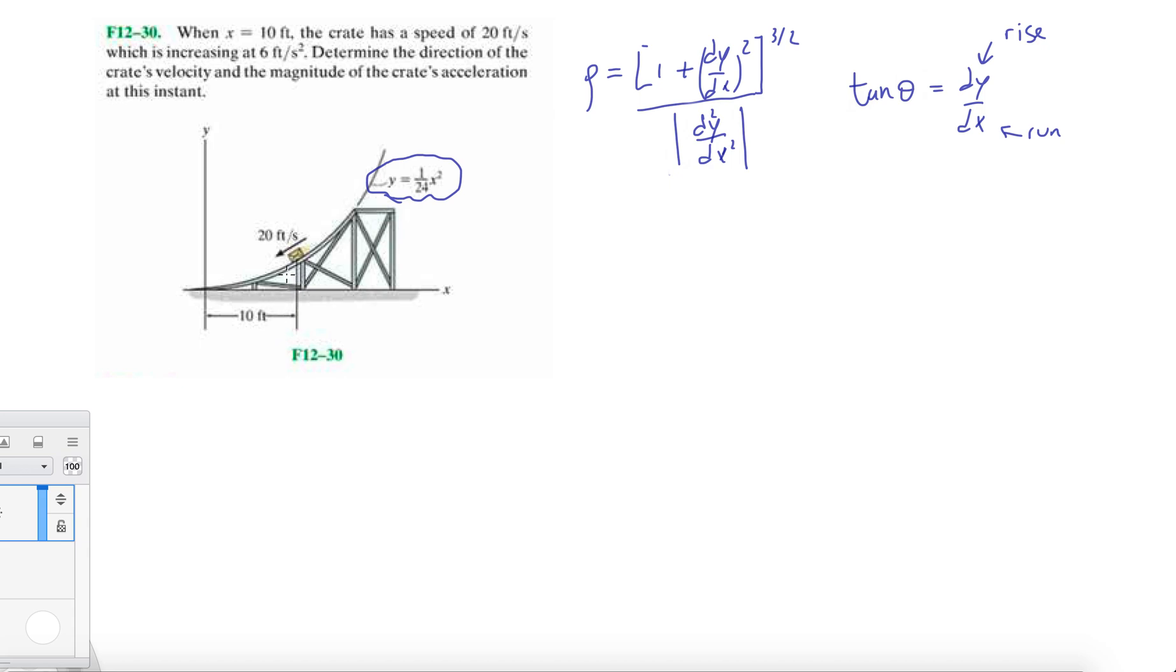Now let's get into this problem. First and foremost, when x equals 10 feet, the crate has a speed of 20 feet per second, which is increasing at 6 feet per second squared, the tangential component.